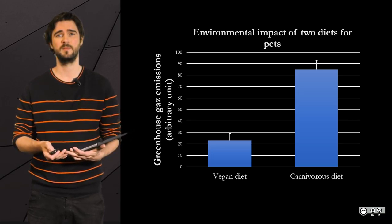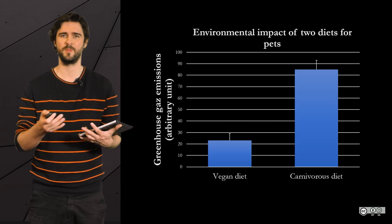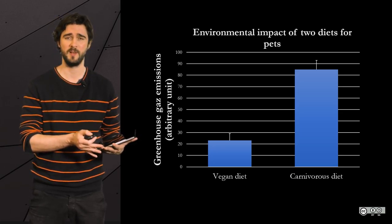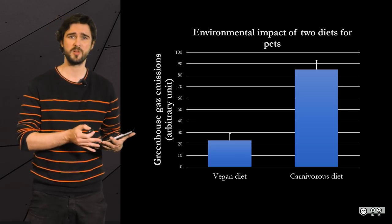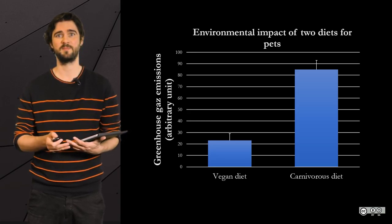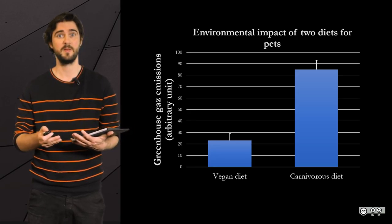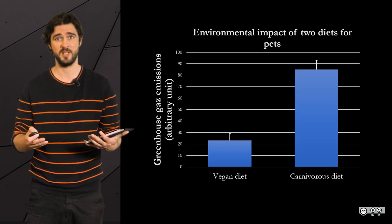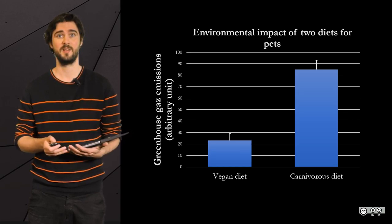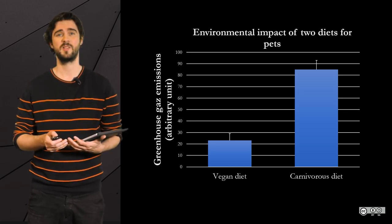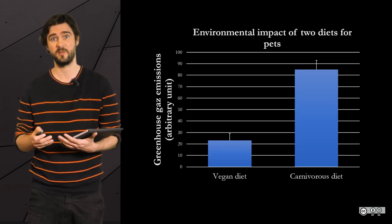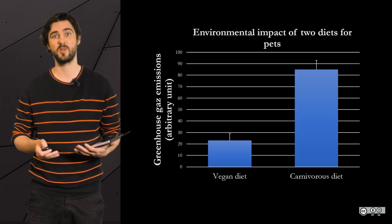Vegan diet versus carnivorous diet. The data shows that the vegan diet is environmentally much more friendly — obviously. And the fallacy would consist in saying, based on such data, that cats can be fed with a vegan diet because it's not bad for them. No, it's not at all like that. You should not make the confusion between what things should or should not be and what things are.